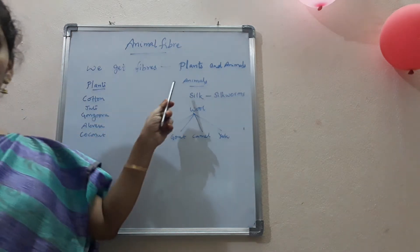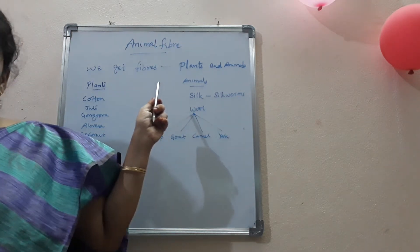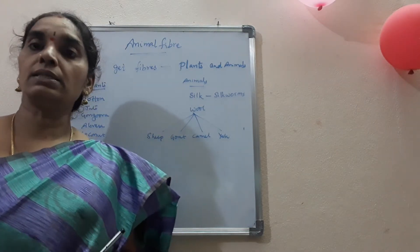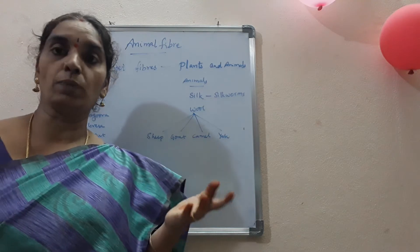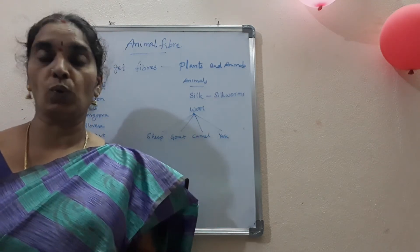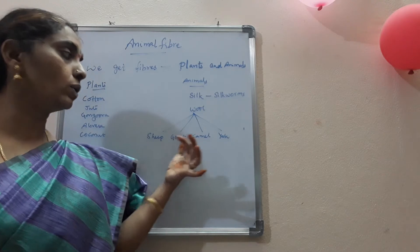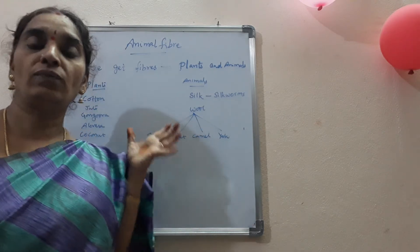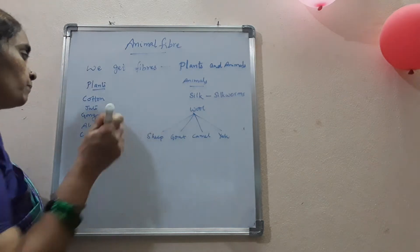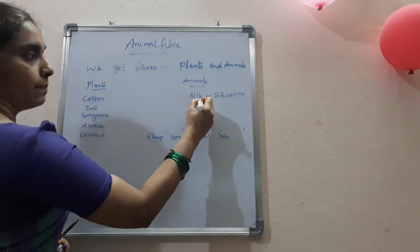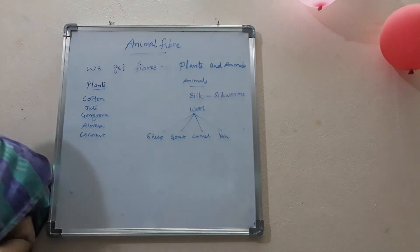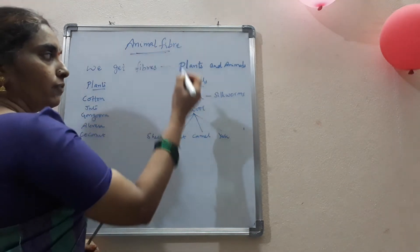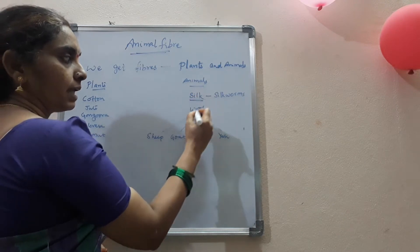Next, coming to the animal fibers — the fibers which we get from animals, such as silk and wool. We get silk from silkworms and wool from sheep. Other animals also, like goat, camel, and yak, also produce wool for us. So now we will see mainly about silk and wool.